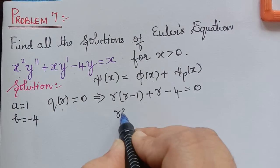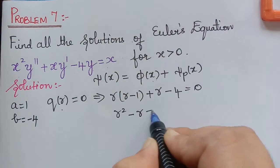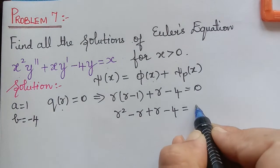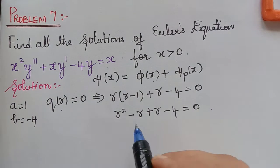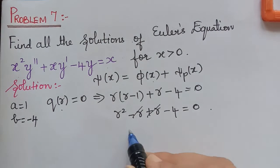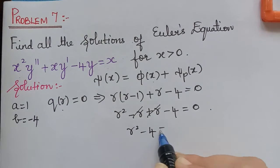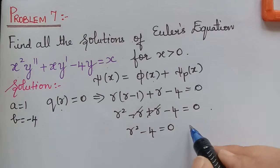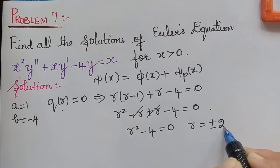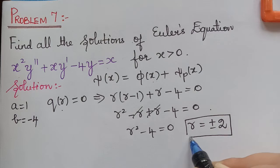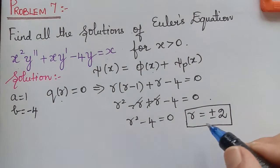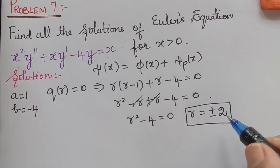Expanding, we get r squared minus r plus r minus 4 equals 0. The two middle terms cancel, giving r squared minus 4 equals 0, so r squared equals 4, and therefore r equals plus or minus square root of 4, which is r equals plus or minus 2.